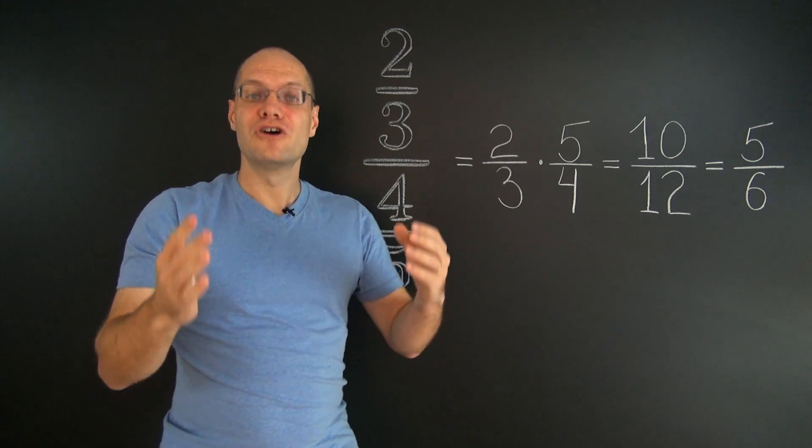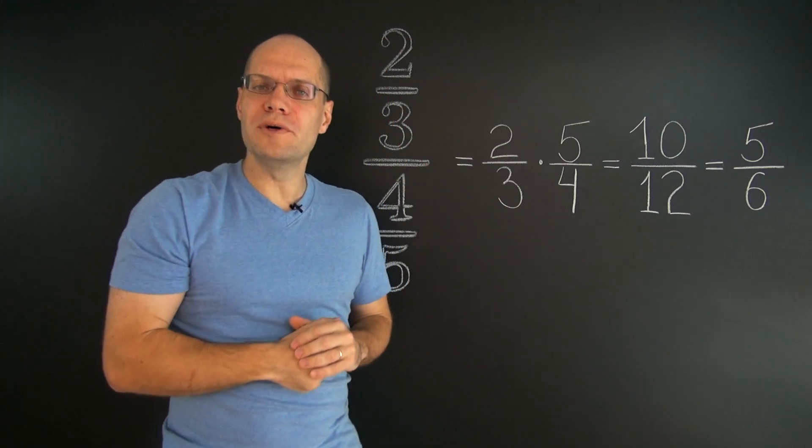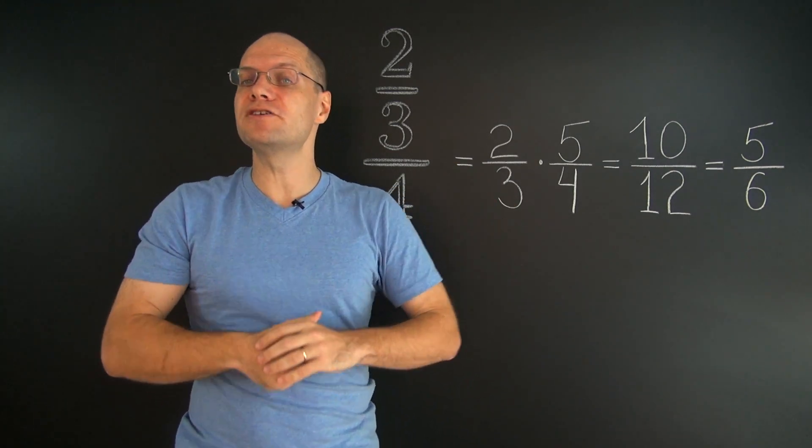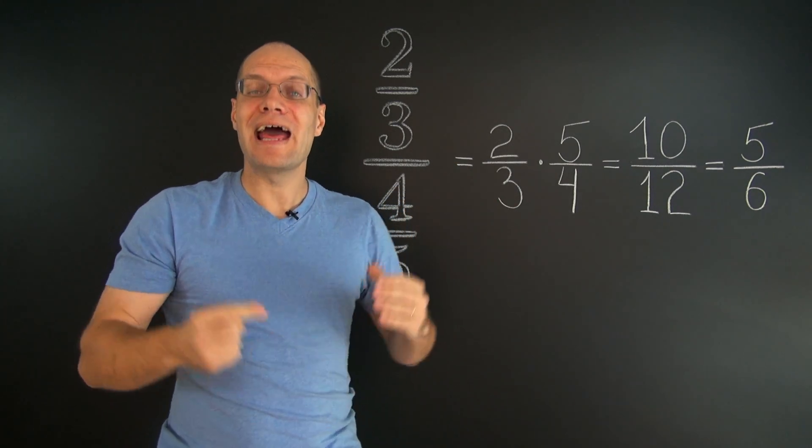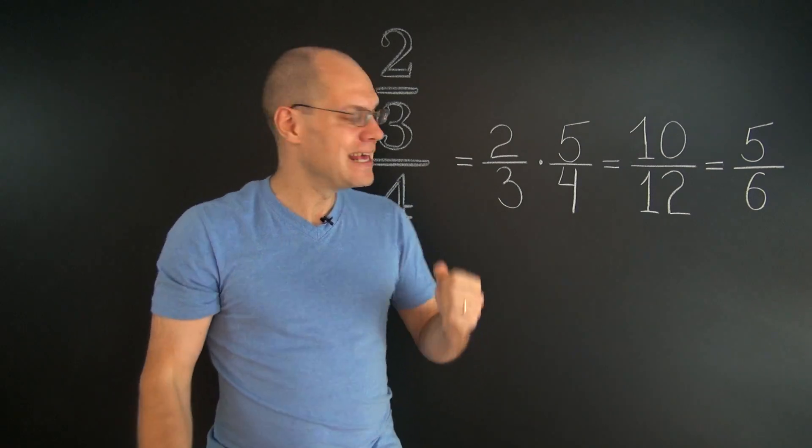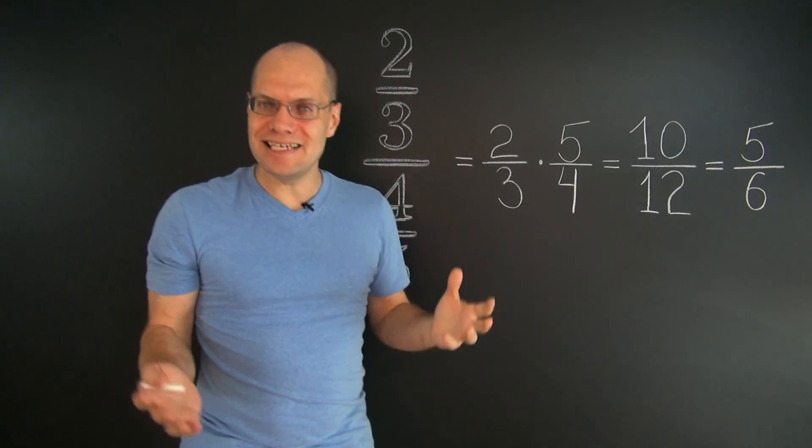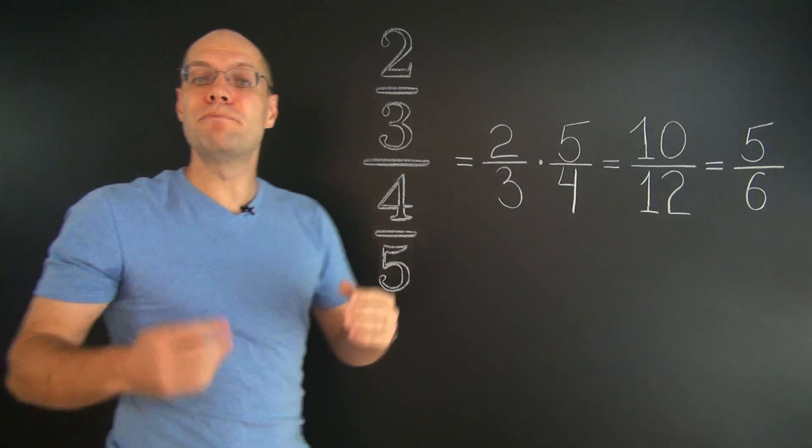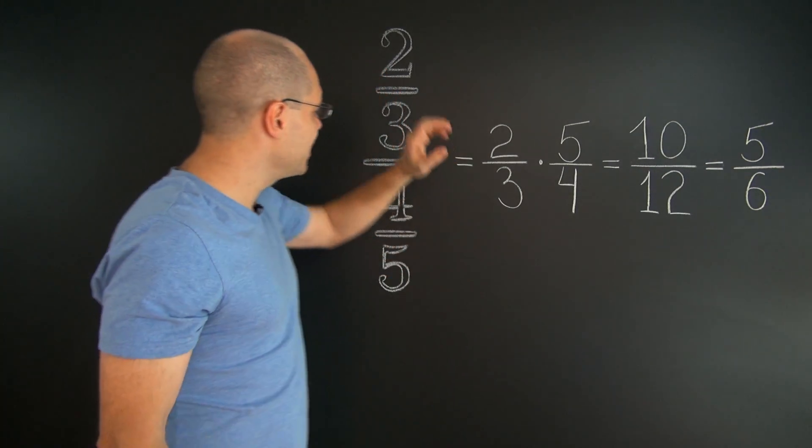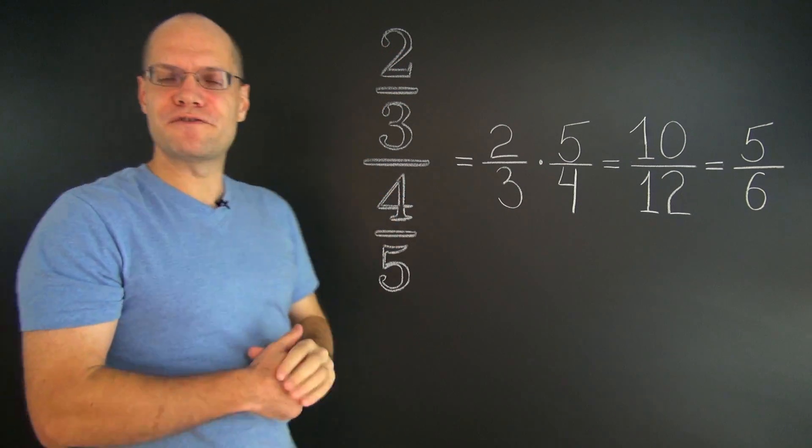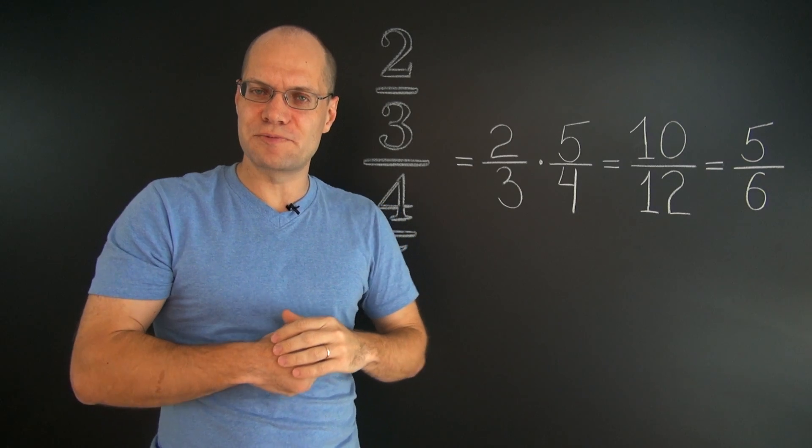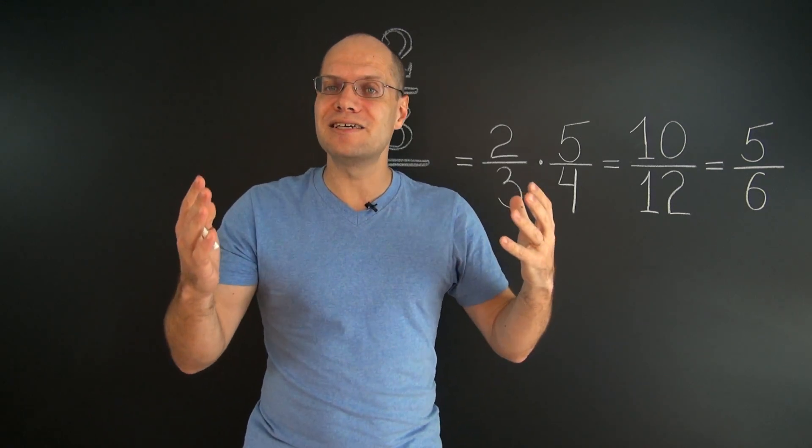Alright, so remember to always begin by assessing the overall algebraic structure of the expression and ignoring the details. In this example, the details are what the specific numbers are. And the important structure is that we have something over a fraction. As soon as you recognize the structure of the expression, the problem is as good as solved.